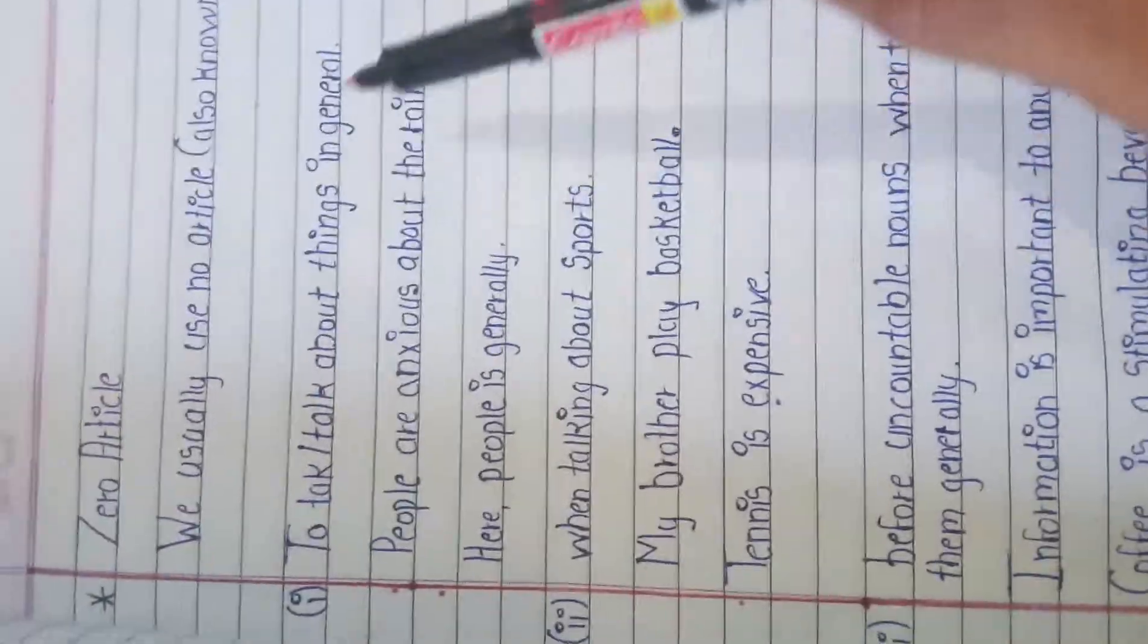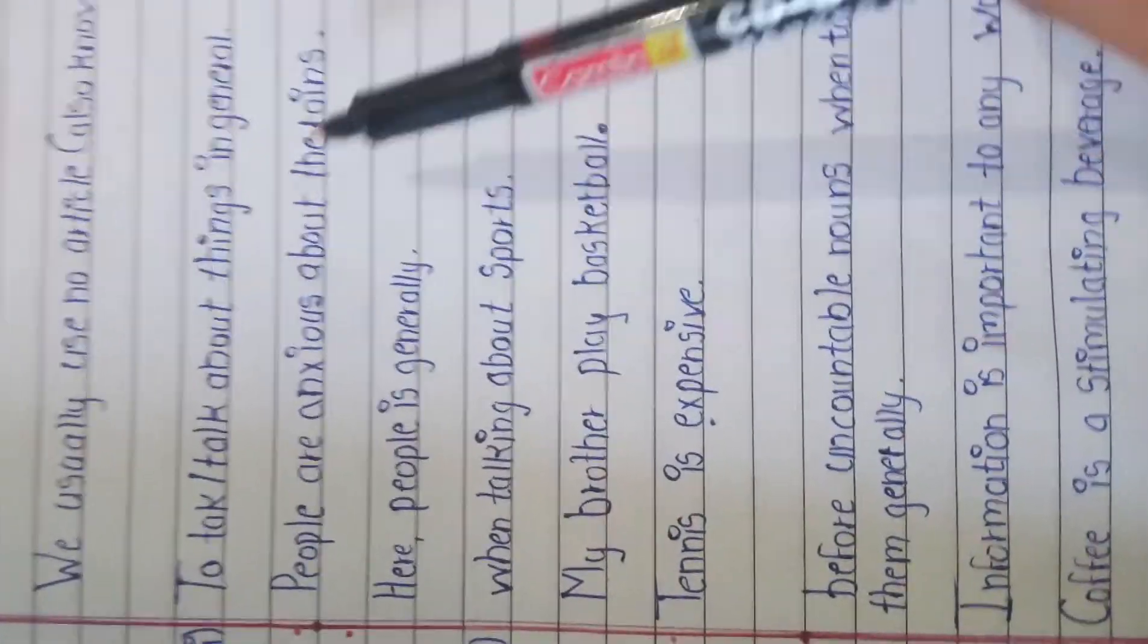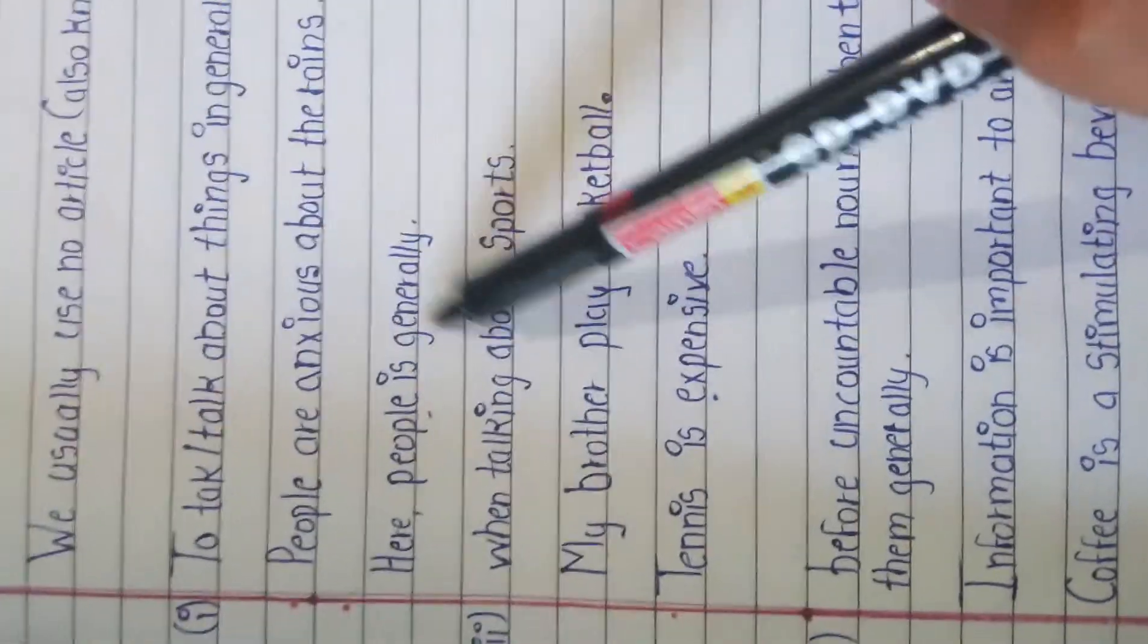We usually use no article to talk about things in general. For example: people are anxious about the rains. Here, people is general.